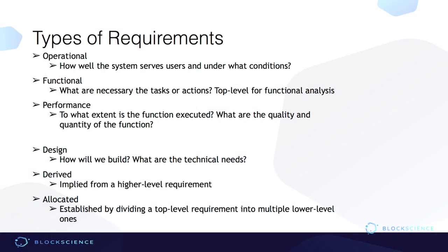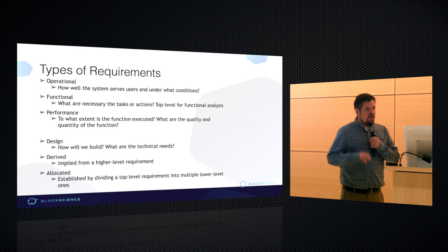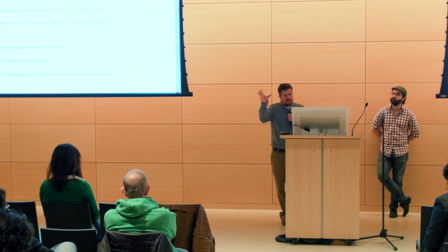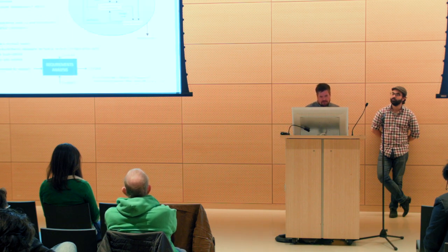A few terms around requirements: the top three are high-level. Operational — how does this serve the user and under what conditions? We like to think it'll work under every network congestion scenario, but that isn't necessarily the case; we need to understand when requirements should and shouldn't hold. Functional — what does it do? Does it do what it's supposed to? Performance — to what extent does that function execute? The other three — design requirements, derived requirements, and allocated requirements — are byproducts that flow from those top-level ones.